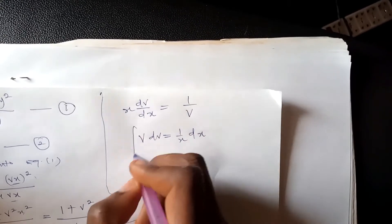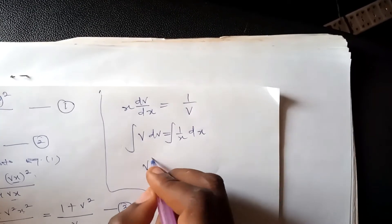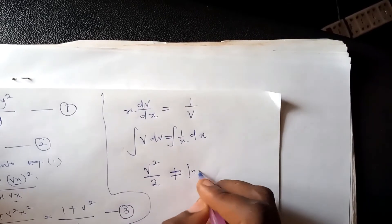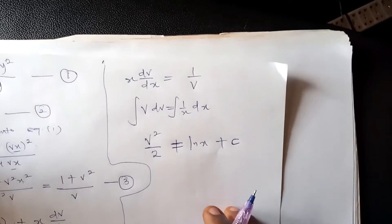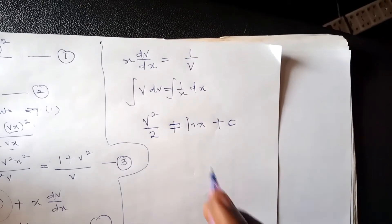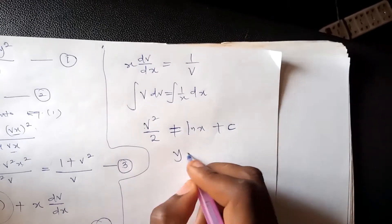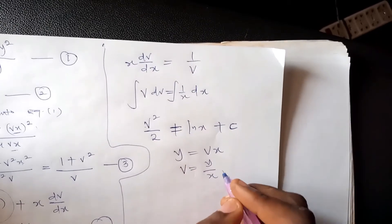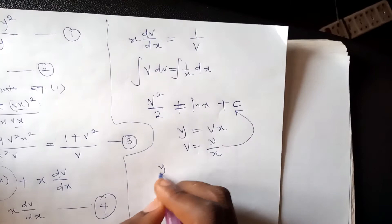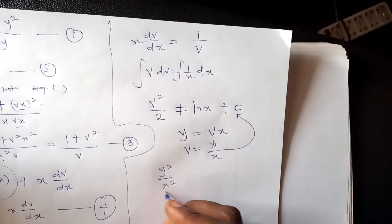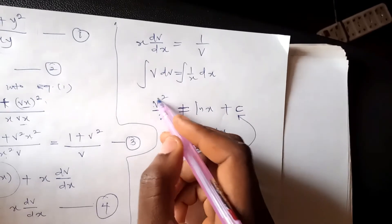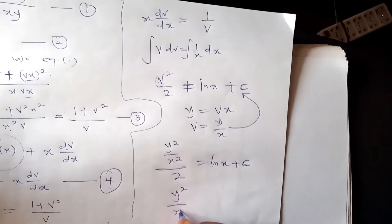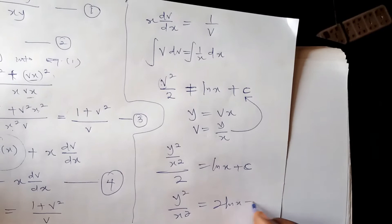Integrating both sides: the integral of v dv gives v²/2, and the integral of 1/x gives ln(x) plus c. We cannot stop here because we are looking for y, not v. Since y equals vx, we know v equals y/x. Substituting back: v²/2 becomes y²/(2x²), so y²/x² equals 2 ln(x) plus c.